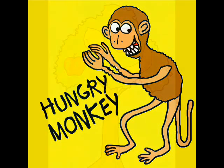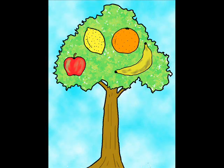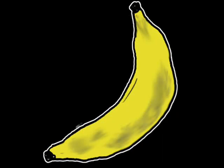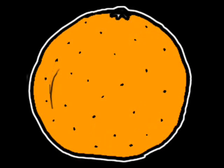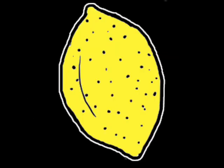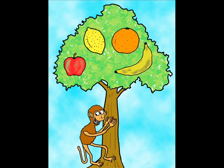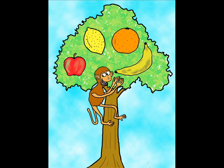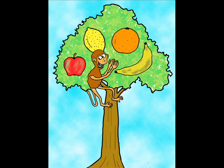Hungry monkey! Look, here's a magic fruit tree with all sorts of fruit. What fruit can you see? A banana, an orange, an apple, a lemon. Here comes the monkey — yum yum yum! I want the orange.